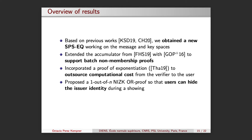We also proposed a 1 out of n OR proof so that users can hide the issuer's identity during a showing. Finally, we extended the security model from FHS19 to take into account the previous modifications.